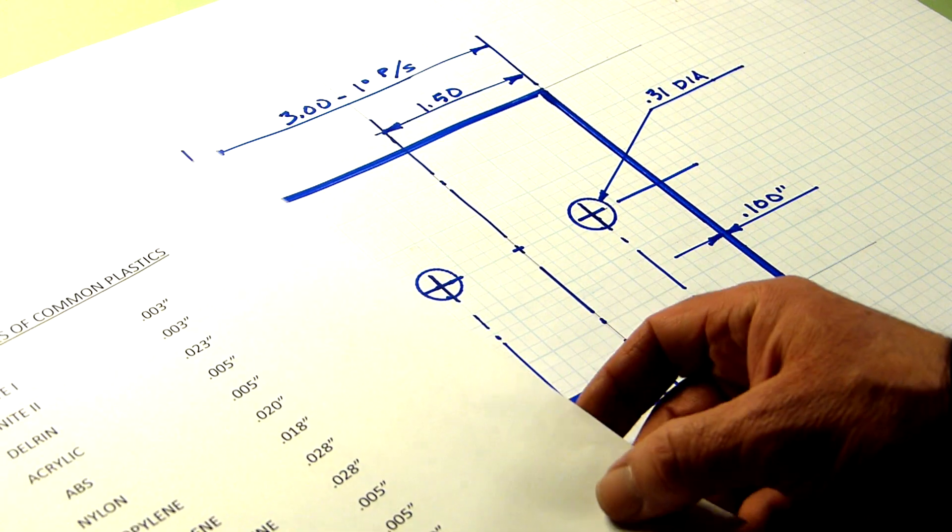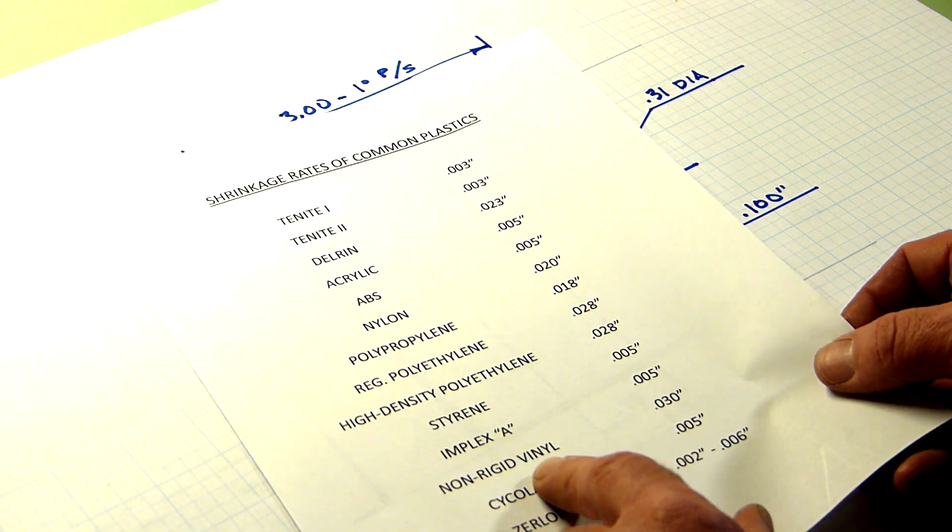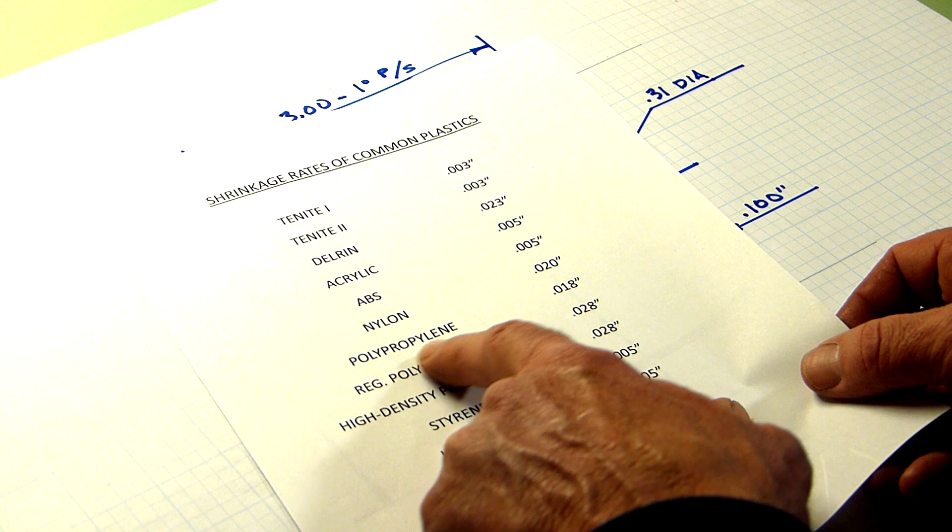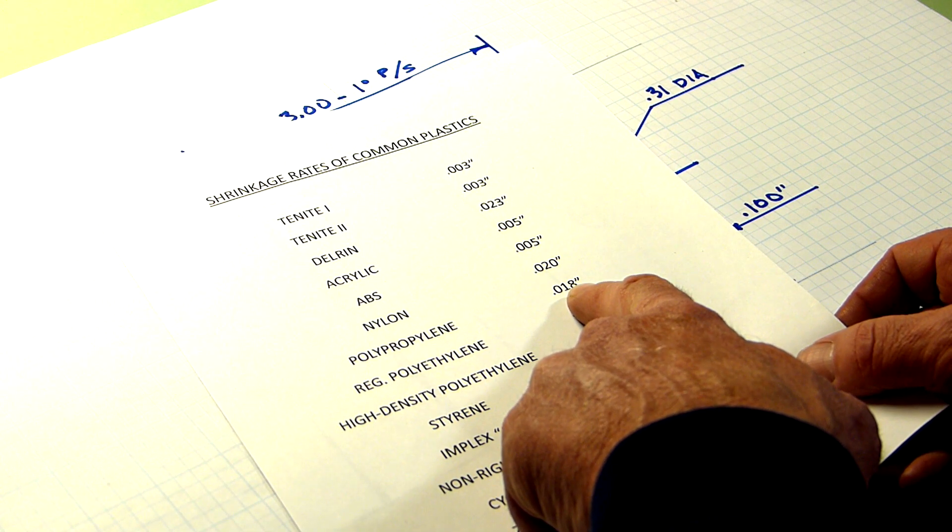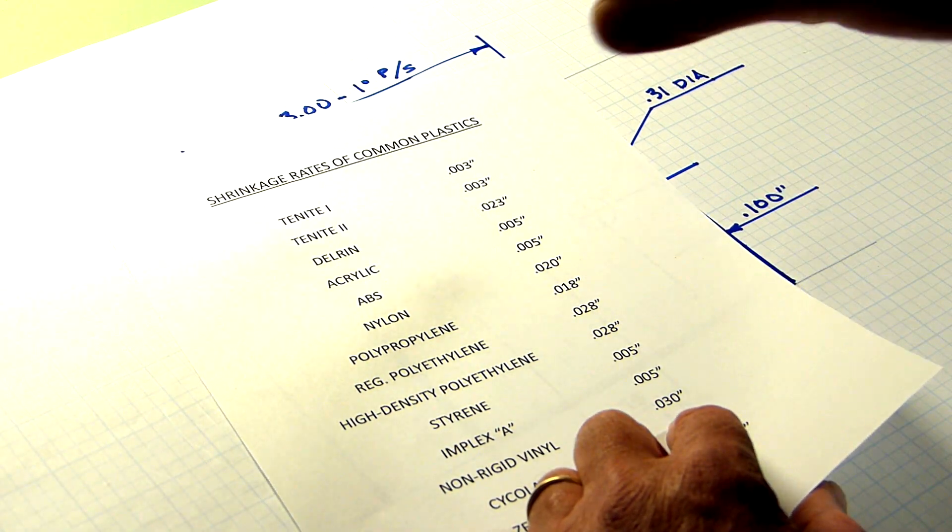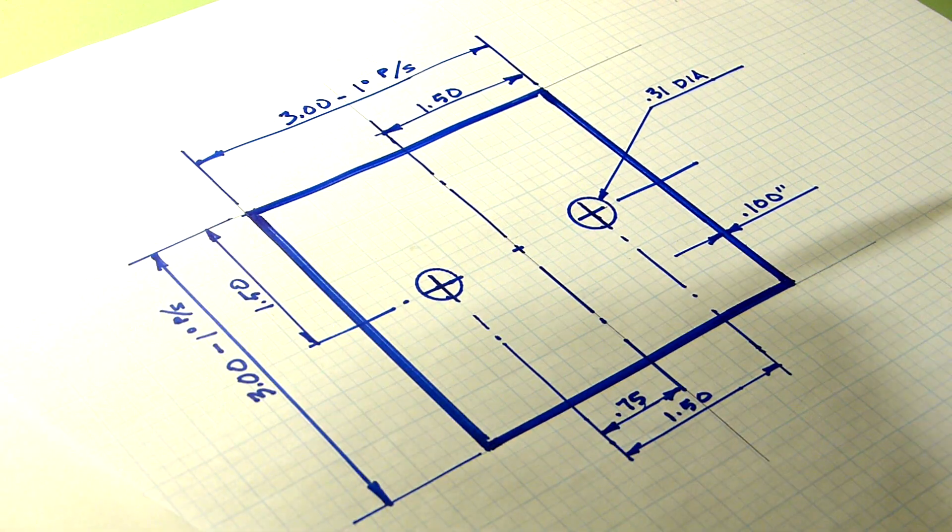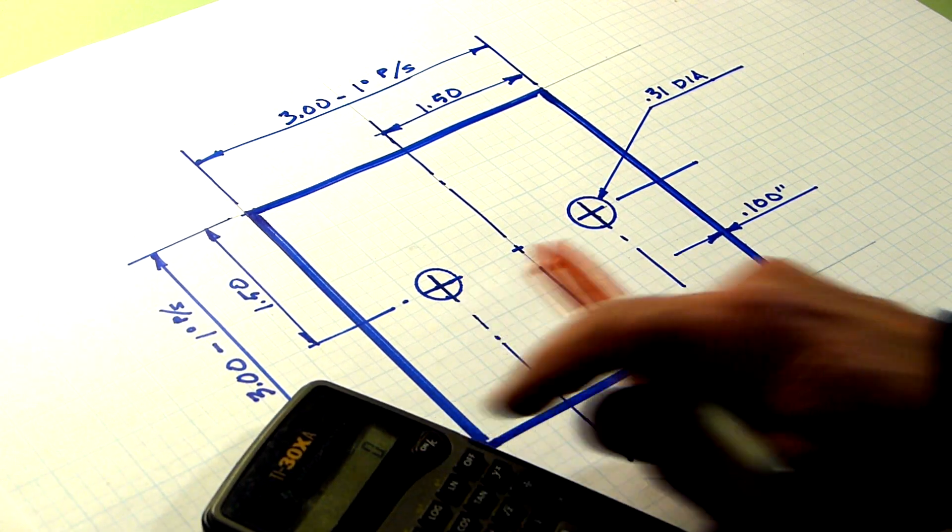So let's just say we choose on this particular drawing, this part, let's go with polypropylene, very common plastic, 18 thousandths shrink rate. So that means every inch is going to shrink down 18 thousandths. So the way we do that is we multiply every dimension on the drawing by 1.018.